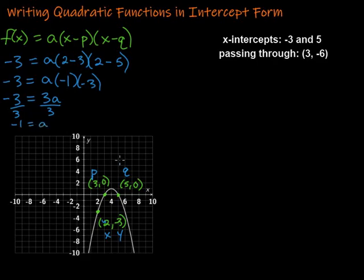Now I can write my function. I'm going to plug back in everything except for this X and Y. I'm done with the X and Y because that's just one specific point. I want to leave the X and Y in the equation because that would be all the ordered pairs that make up that graph. We have our function f(x) equals a, which is negative 1 in this case, so just negative. And then X minus P, my P is still 3, so minus 3. And then X again minus Q, which is 5. And boom, there is my function.